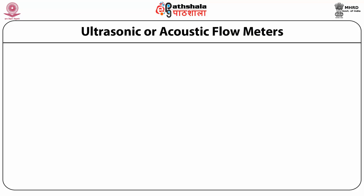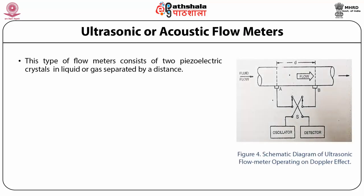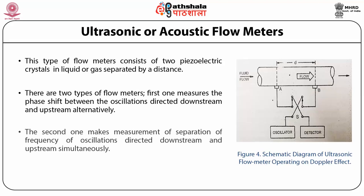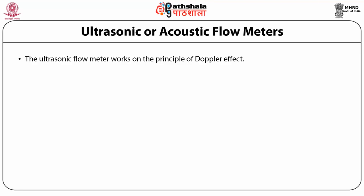Ultrasonic or acoustic flow meters consist of two piezoelectric crystals in liquid or gas, separated by a distance. One crystal works as a transmitter and the other as a receiver. There are two types: the first measures the phase shift between oscillations directed downstream and upstream alternately; the second measures the difference in frequency of oscillations directed downstream and upstream simultaneously. The schematic is shown in figure 4. The ultrasonic flow meter works on the principle of the Doppler effect.